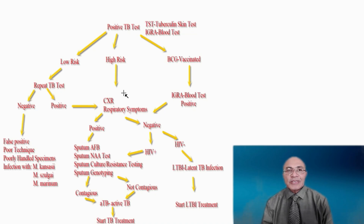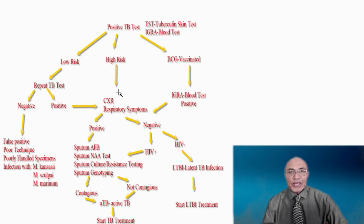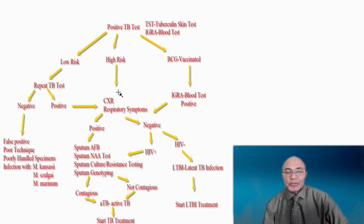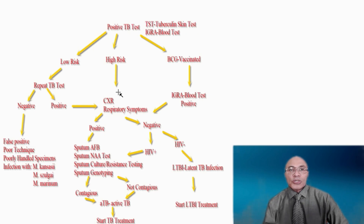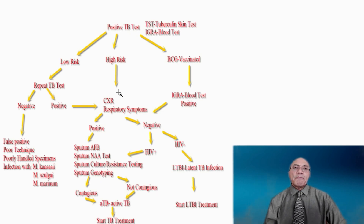Active tuberculosis disease can be determined by performing a chest X-ray on the patient. Changes on the chest X-ray such as pleural effusions, thickening of the pleura, granulomas, or cavities signify active disease. At the same time, we evaluate the patient to see if they have any signs or symptoms of active tuberculosis disease, such as weight loss, chronic cough, chest pain, coughing up blood, fever, or night sweats. These are all signs and symptoms that indicate the patient may have active tuberculosis disease, and we will treat them as such.